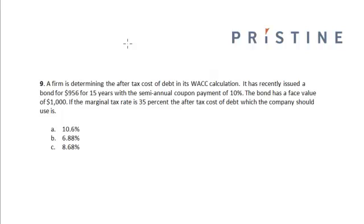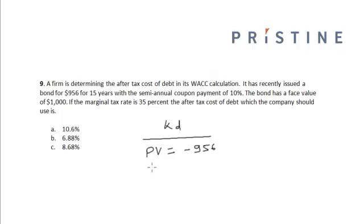First, we need to calculate the cost of debt before tax using a financial calculator. We input the present value of the bond as 956, the number of periods as 30 because it pays semi-annual coupon payments, the PMT (coupon payment) as 50 paid semi-annually, and the face value as 1000.